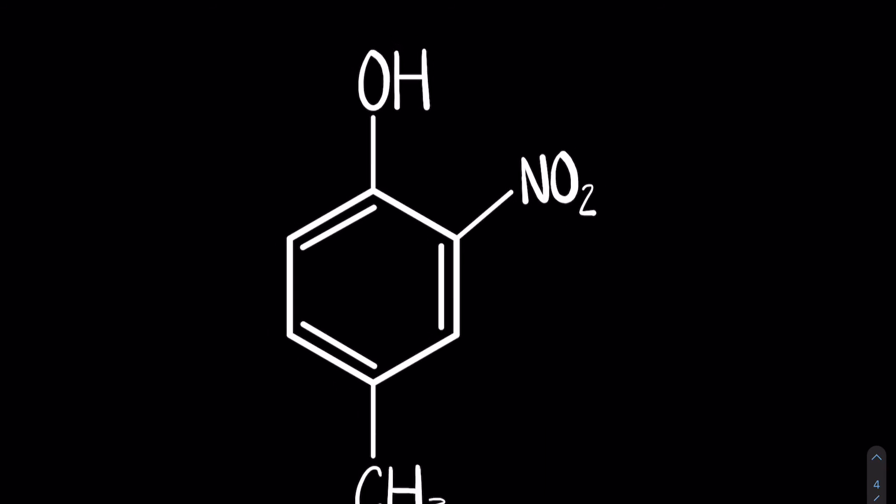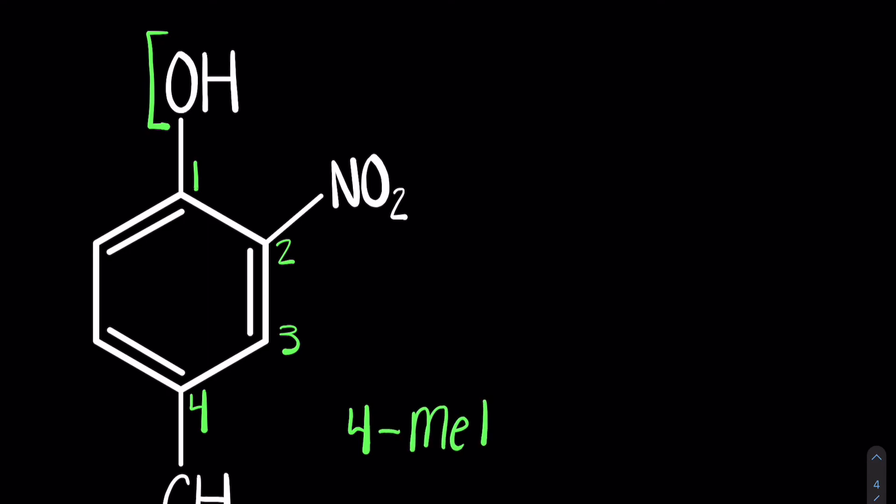All right, so one more example before I let you guys go. Alcohol attached to a benzene, therefore this is a phenol. Nitro-methyl. So one, two, three, four. So this receives the name 4-methyl—make sure alphabetical order—4-methyl, 2-nitro, 4-methyl, 2-nitrophenol.